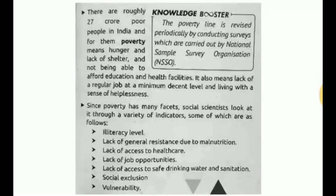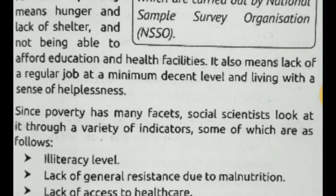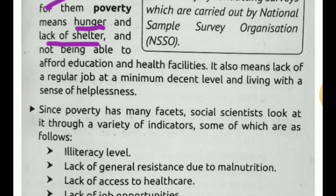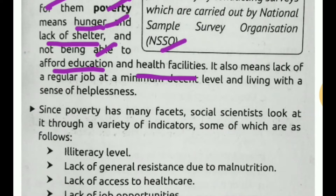Poverty means a state of deprivation. There are roughly 27 crore people in India who are considered poor. Poverty means hunger, lack of shelter, and not being able to afford education and healthcare facilities. It also means lack of a regular job and a decent living standard. Basic things — food, shelter, education, and healthcare — if absent, a person is considered poor.